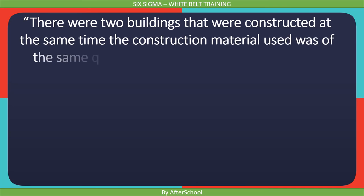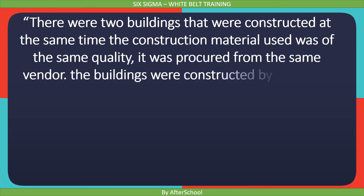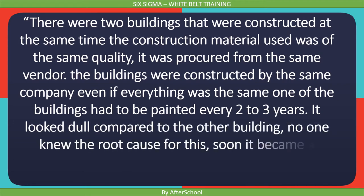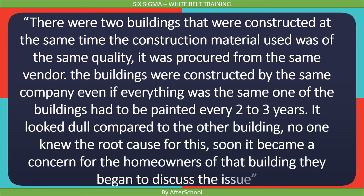This is an example of a five whys analysis. There were two buildings that were constructed at the same time. The construction material used was of the same quality, procured from the same vendor, and the buildings were constructed by the same company. Even though everything was the same, one of the buildings had to be painted every two or three years — it looked dull compared to the other building. No one knew the root cause for this, and it became a concern for the homeowners.